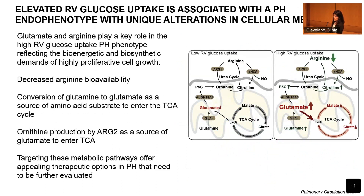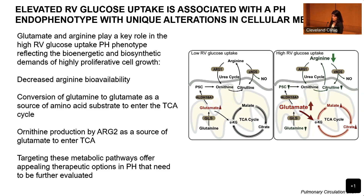Elevated RV glucose uptake was associated with a unique metabolic endophenotype — the main pathways were glutamate and arginine. This is illustrated by decreased arginine, decreased conversion of arginine to citrulline indicating eNOS inactivation, decreased citrulline, activation of arginase going into ornithine, feeding into glutamate, decreased glutamine, increased glutamate feeding into alpha-ketoglutarate, all going into the TCA cycle with increased malate and citrate. This reveals metabolic heterogeneity and opens up new metabolic pathways that could be targeted for therapies in pulmonary hypertension.